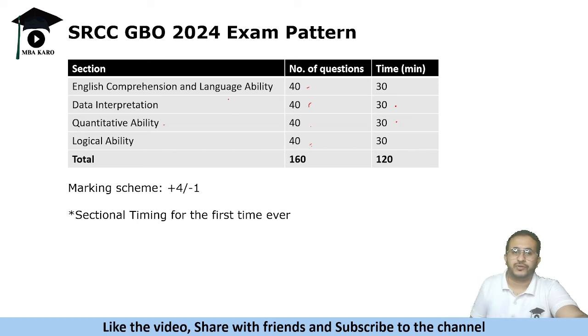English comprehension and language ability is the section where people must have scored heavily, and also the reasoning part was quite simple. People did well on these two sections. These two sections, calculations are involved and they were difficult as well. DI was moderate to difficult, quant was very difficult. You can expect CAT level questions being asked in the quant section.